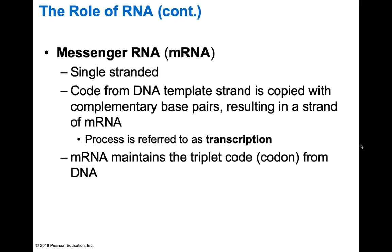Messenger RNA is a single-stranded molecule that copies the template strand of DNA to get the code, then transports it to a ribosome. It uses a triplet code called codons. If you have three bases touching — a triplet — on the mRNA specifically, that is called a codon. I keep saying mRNA specifically because that's the only place it's actually called a codon, and that's very important when we read our codon charts. A triplet code on mRNA is called a codon.